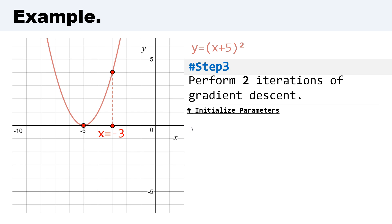In this example we perform two iterations of gradient descent for understanding the logic of how gradient descent works. Let's begin with initialization of parameters.